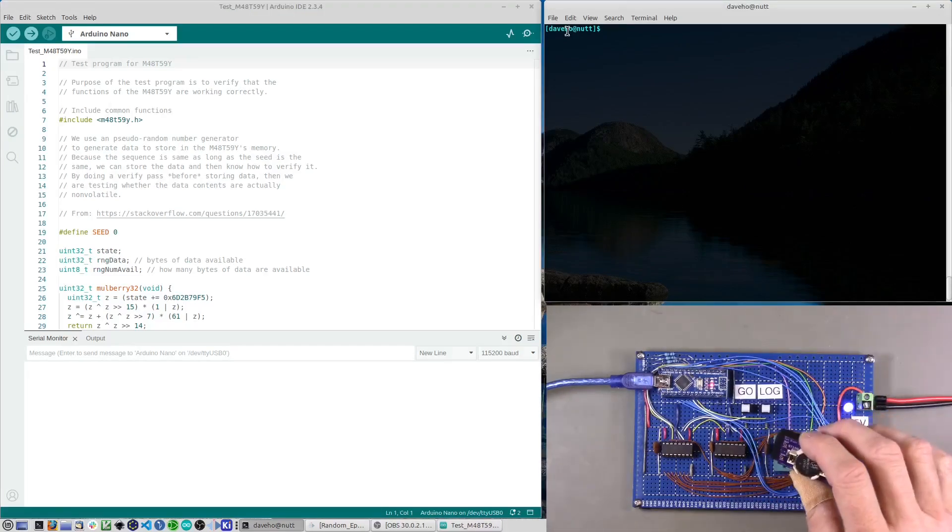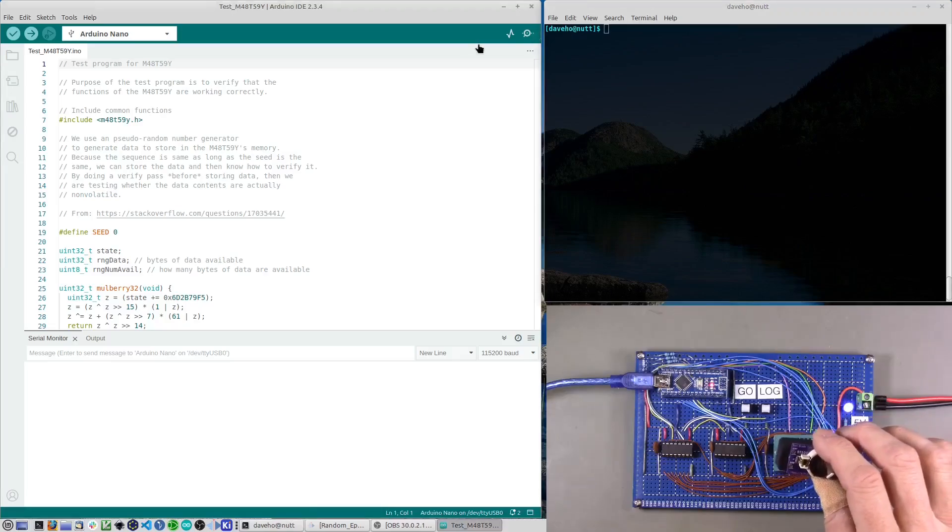I've got the tester programmer all set up and I'm going to program the test sketch into the device. So this is the sketch that tests an M48T59Y to see if it is working correctly. Here is how the test sketch works. The test sketch generates a pseudo-random sequence of bytes. There are three phases.